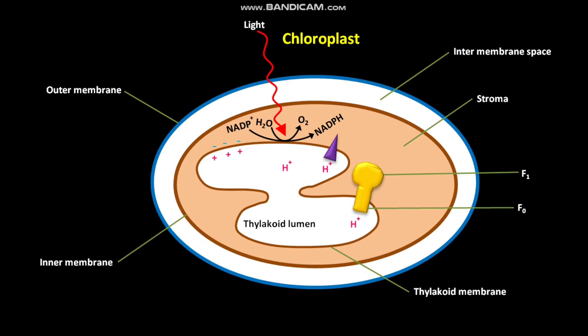whereas a negative electric potential is formed on the stromal face of the thylakoid membrane. Also, due to this H+ ion concentration difference across the thylakoid membrane, H+ ions move into the stroma from the thylakoid lumen through the F0 portion of the F0-F1 complex. This H+ ion movement is coupled to ATP synthesis in the F0-F1 complex. During ATP synthesis in the F1 portion, in a biochemical reaction, ADP and Pi are converted into ATP.